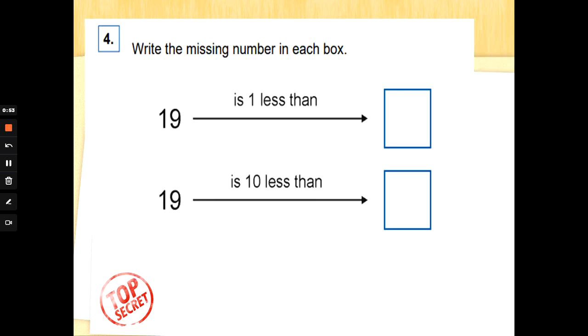Number four: write the missing number in each box. 19 is one less than—one less than, so we don't know the number here. We do the opposite of one less, which is one more. 19 add one is 20. Okay.